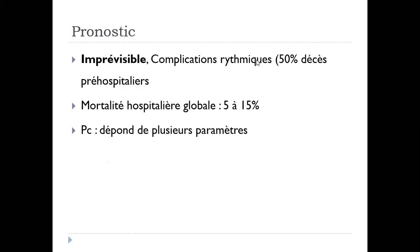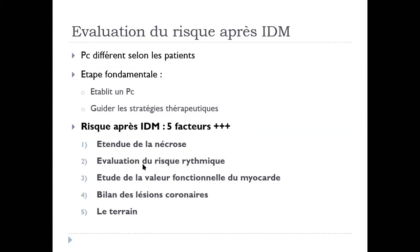Le pronostic, il est imprévisible. Complications vétriques, 50% d'iciperie hospitalière. La mortalité hospitalière globale, elle est de 5 à 15%. Le pronostic dépend de plusieurs paramètres : le temps avant la revascularisation myocardique, l'étendue de la nécrose, l'évaluation du risque rythmique, l'étude de la valeur fonctionnelle du myocarde, les bilans des lésions coronaires et le terrain du patient.